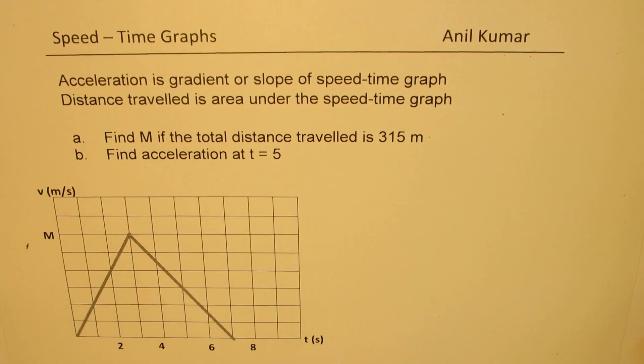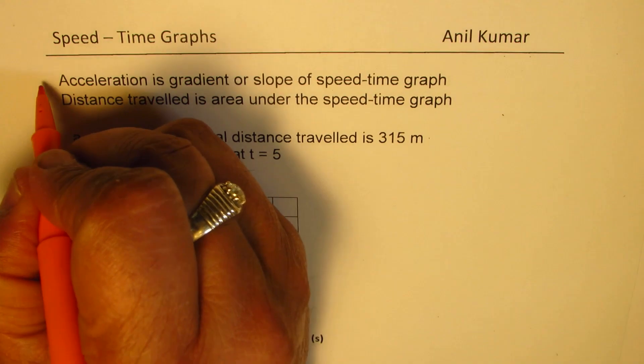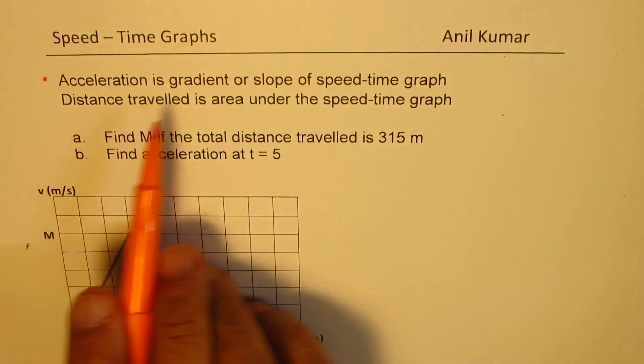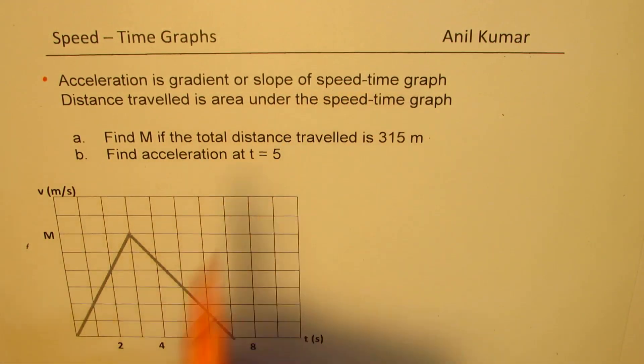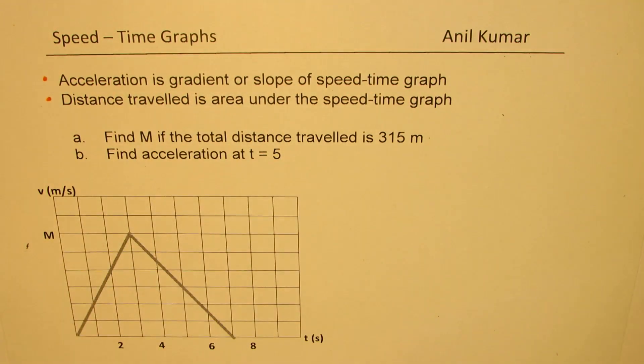From a given graph, we'll read some information. To know the basics, we should understand that acceleration is the gradient or slope of speed and time graph and distance traveled is area under the speed time graph.